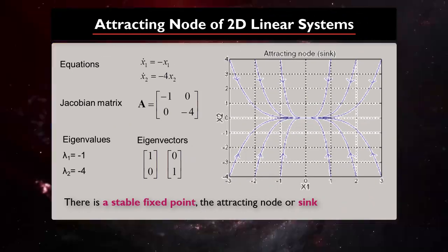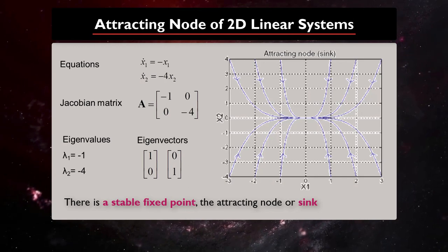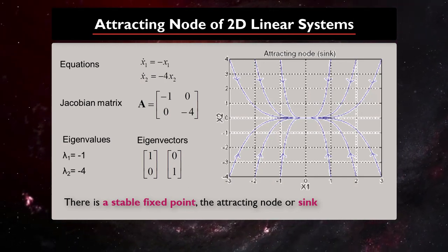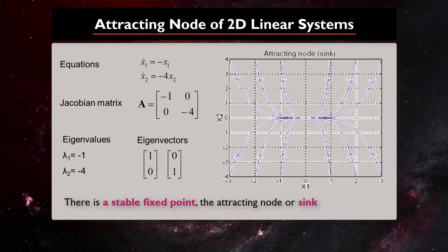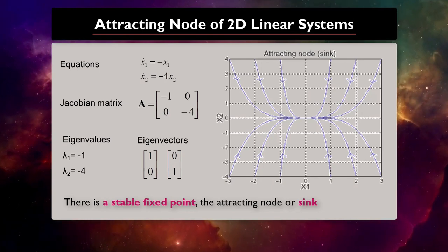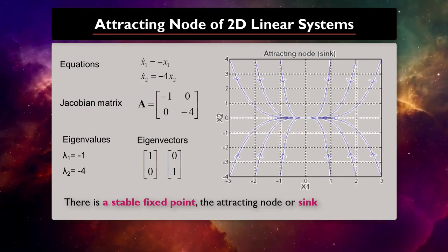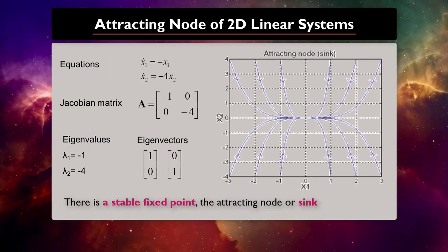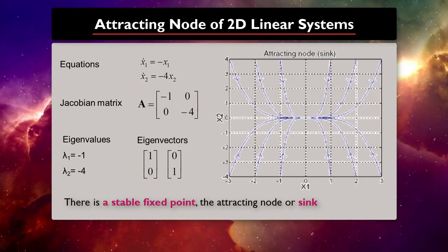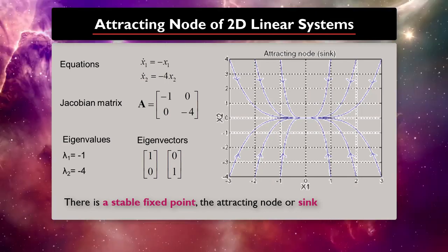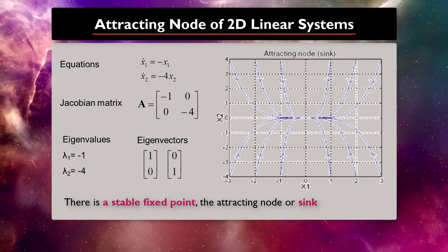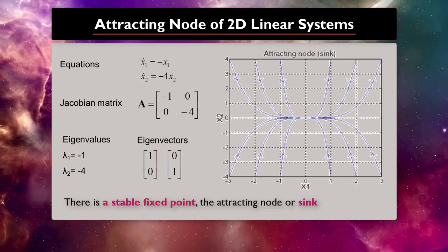Let's look at more examples for a two-dimensional linear dynamical system. Consider the following very simple system with only two linear equations. First, we need to calculate the Jacobian matrix of the system, and then we need to calculate the eigenvalue of the matrix. Eigenvalues are -1 and -4, so both of them are negative, which means that there is stable fixed points, the attracting nodes, and we can call it sink.